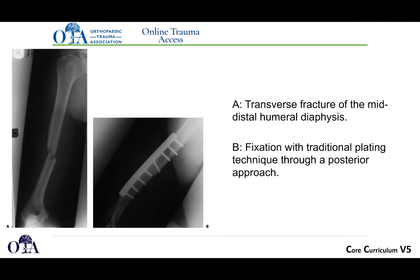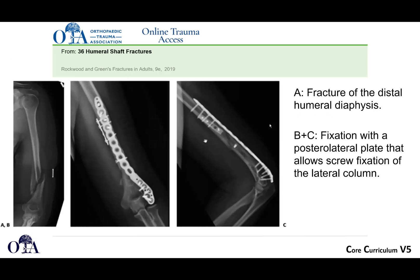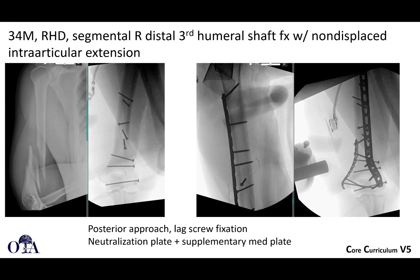Here's an example of a transverse fracture at the mid-diaphysis with traditional open reduction internal fixation via posterior approach. Here's a slightly more complex distal third fracture with fixation using a supplementary plate, lagscrew fixation, and a posterior lateral angled plate allowing fixation all the way down onto the distal segment. If you used a straight plate here, you might run right into the olecranon fossa — so these hockey stick-shaped plates allow you to extend your fixation all the way distally.